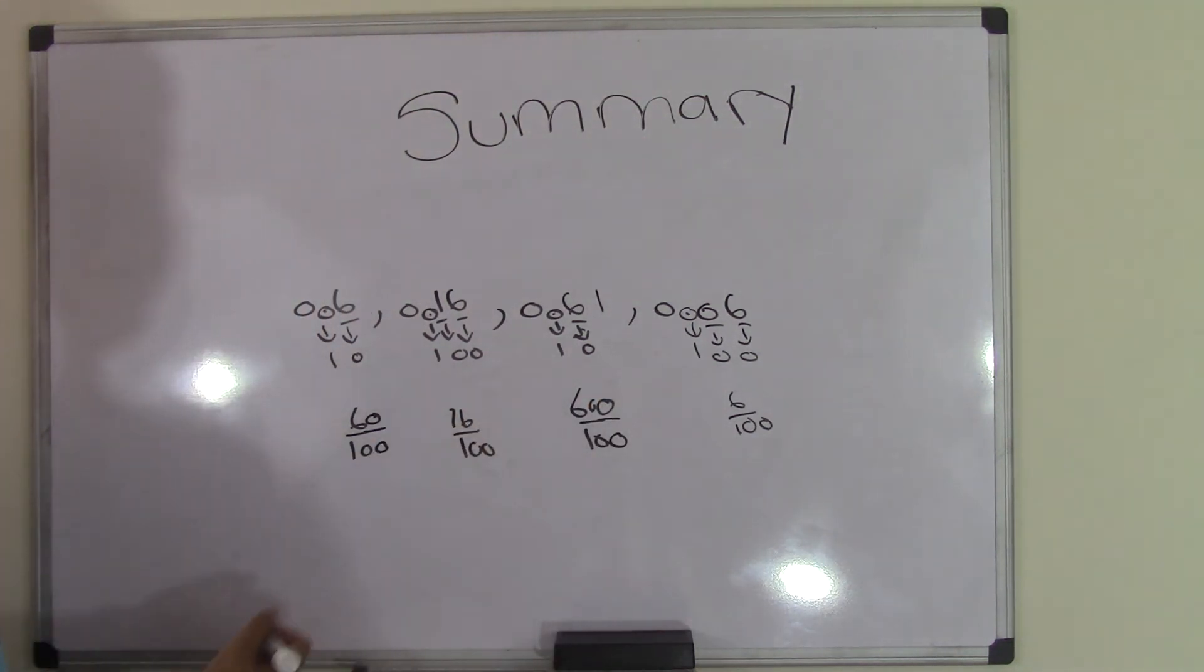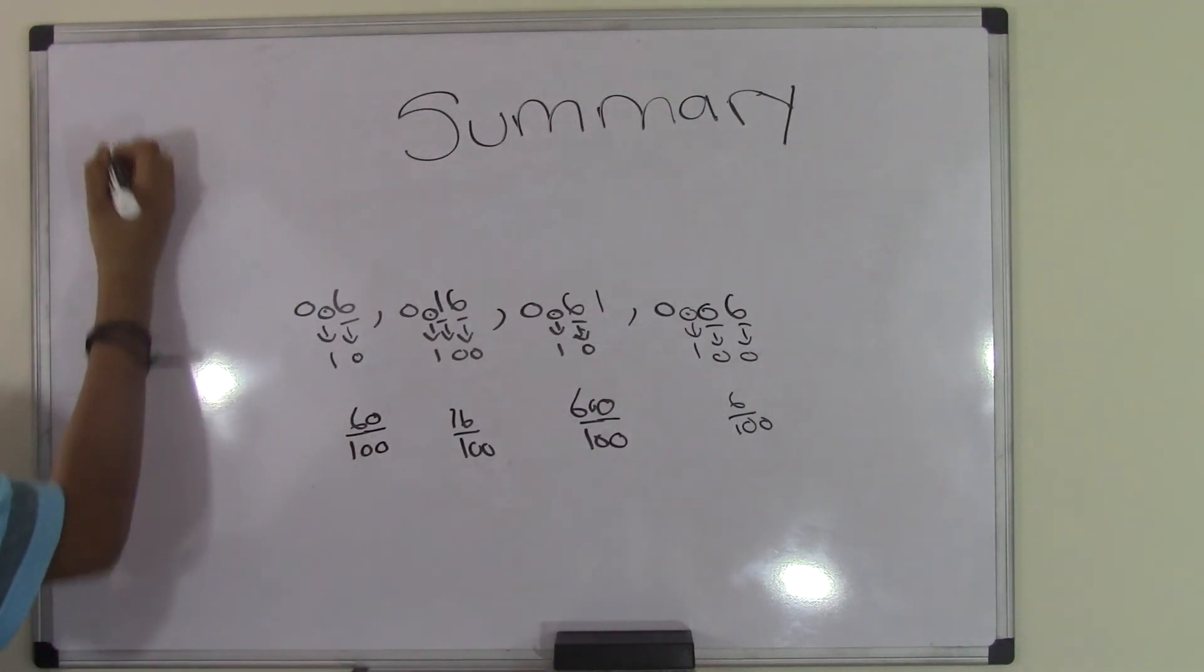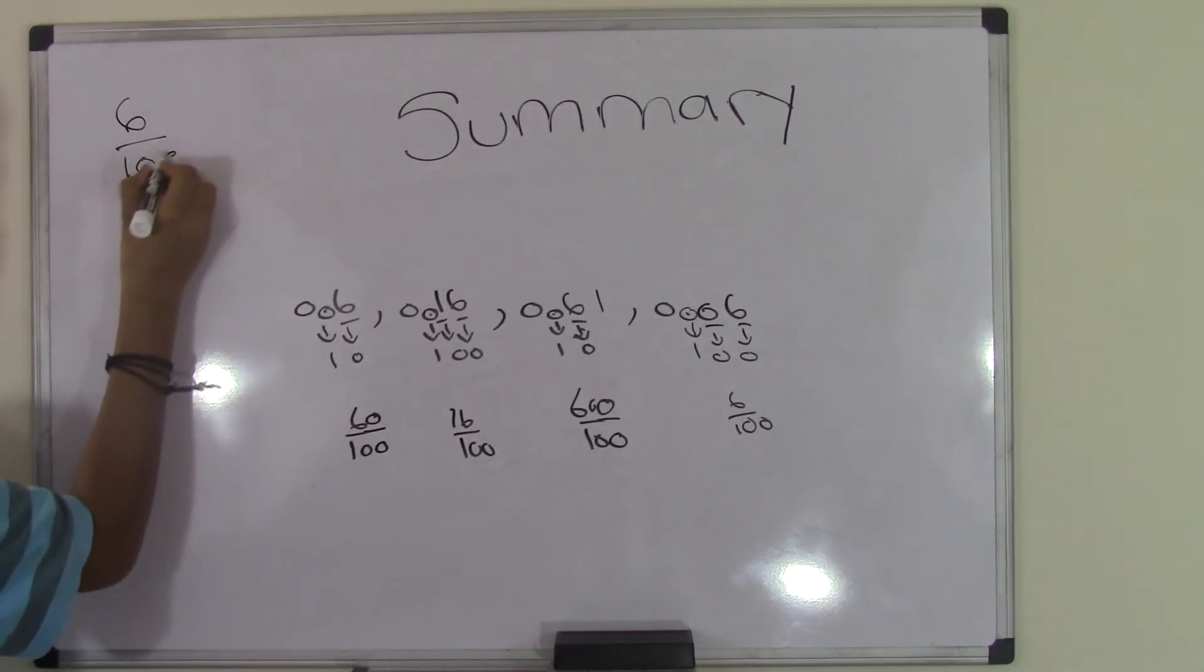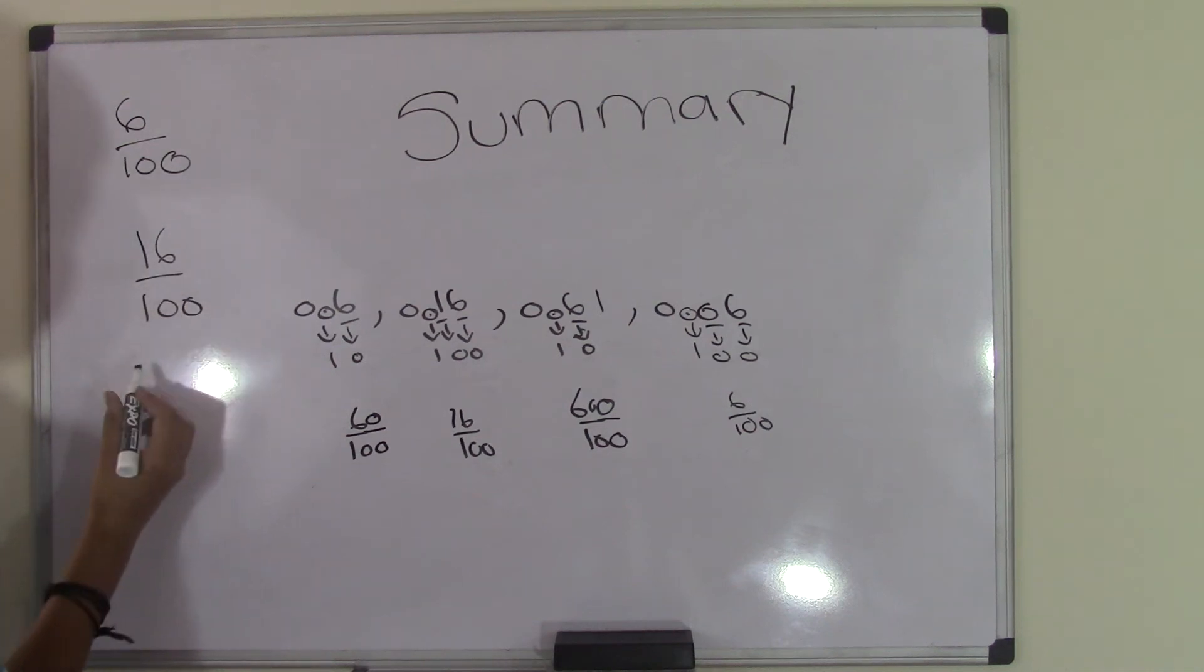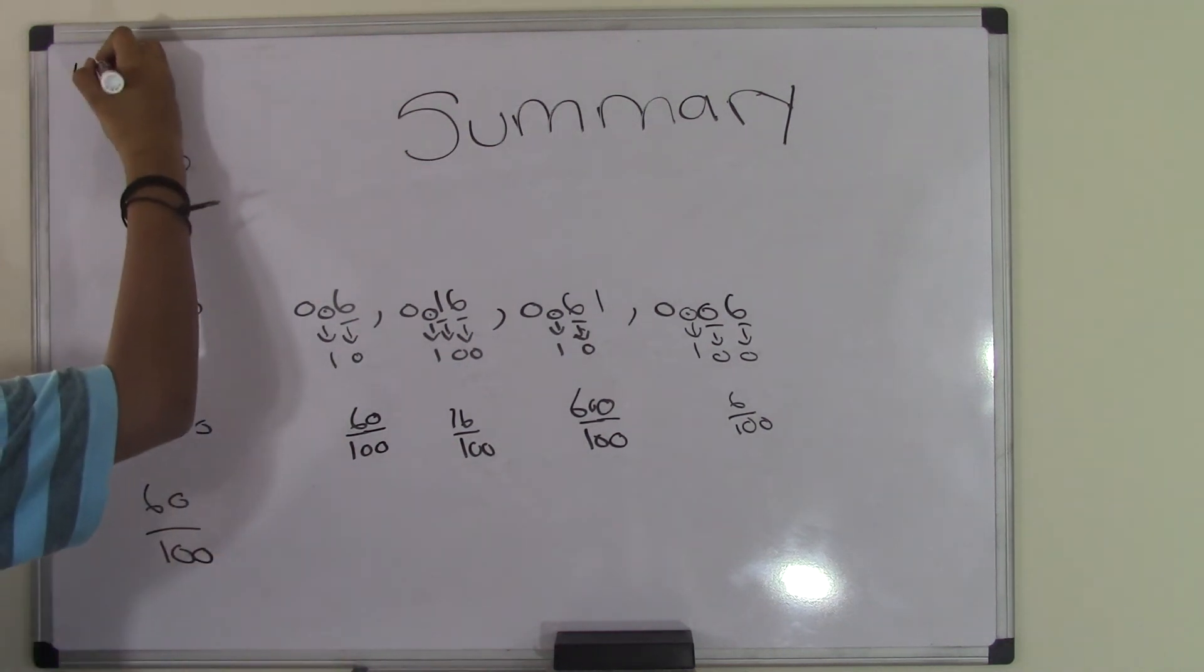Now we can put it in vertical form to understand this better. Remember, always put the least to greatest. So 6 hundredths will go first, and then will come 16 over 100, and then it will be 60 over 100, and then it will be 60 over 100 again. This here is called the least to greatest form.